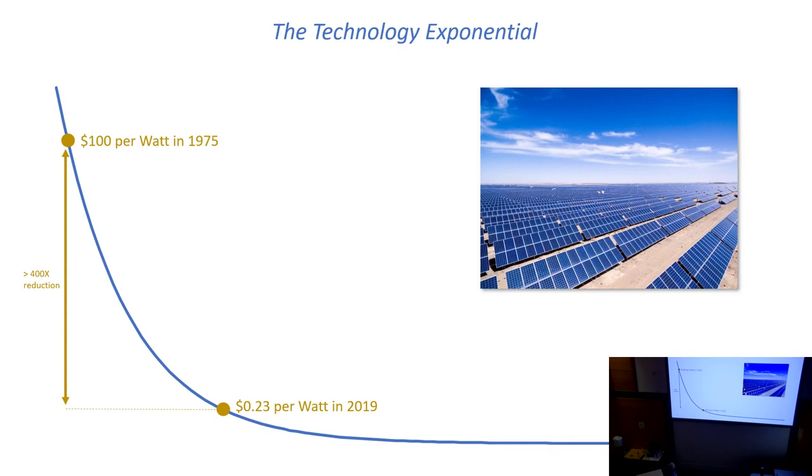These exponential technologies, along with better policy making, are pretty much the only tool we have to fight against these exponentials that are more negative and pernicious. Solar power is a great example. In 1975, a watt of solar power was a hundred dollars. In 2019 it was a quarter of a cent, and it's projected to continue to fall. It's gone from totally unviable to much cheaper than fossil fuels.